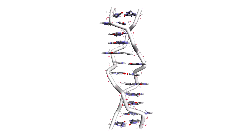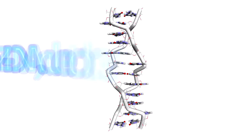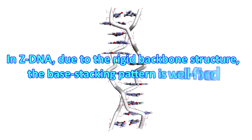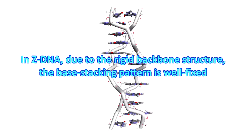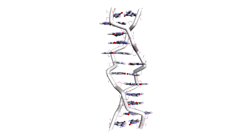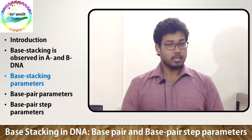In Z-DNA, due to the rigid backbone structure, the base stacking pattern is well fixed. However, in A and B-DNA, substantial deviations from ideal base stacking geometries are observed.